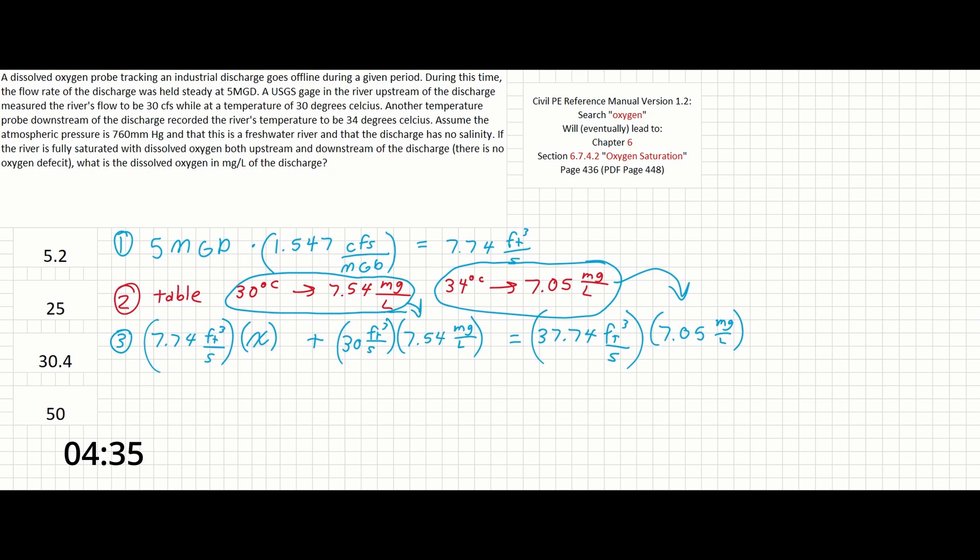Simplifying down this mass balance, we can find that X is going to equal 5.15 mg per liter, which is very close to our first answer here.